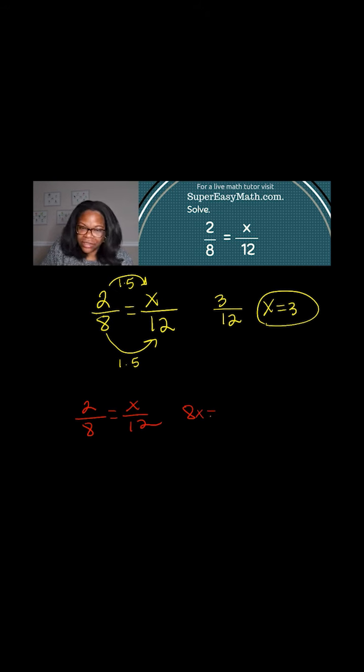Well, that's 8x. And then what's 2 times 12? Well, that's 24. And then you solve for the x this way, and you're left with x equals 3. Same thing.